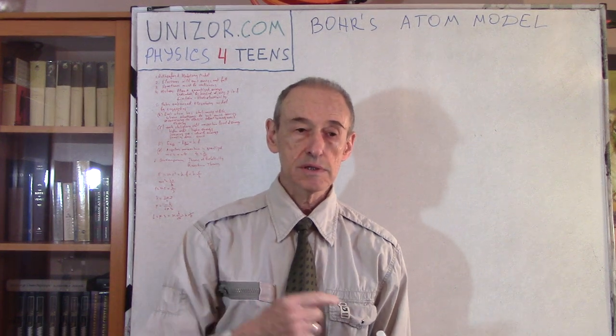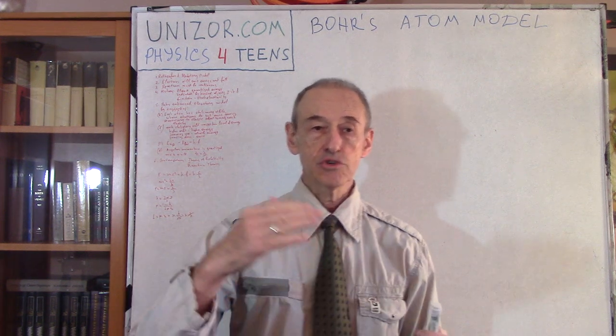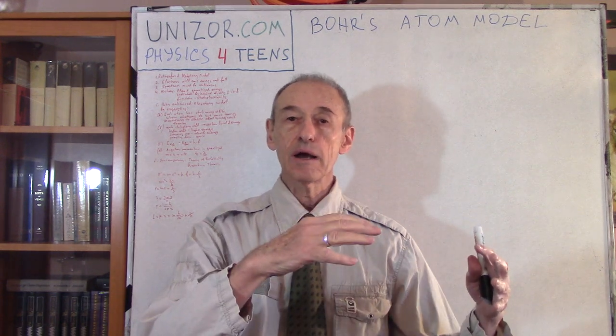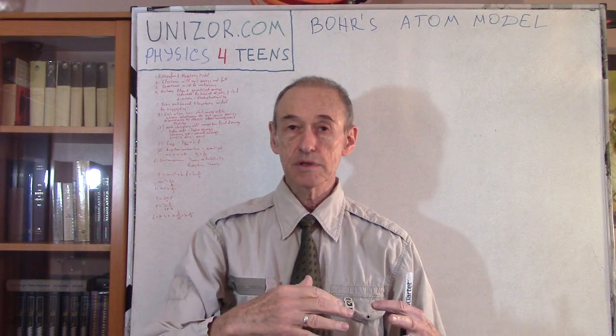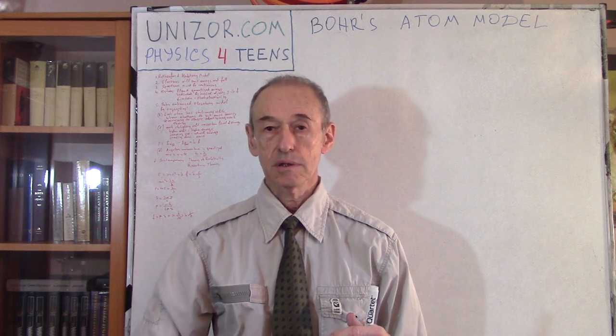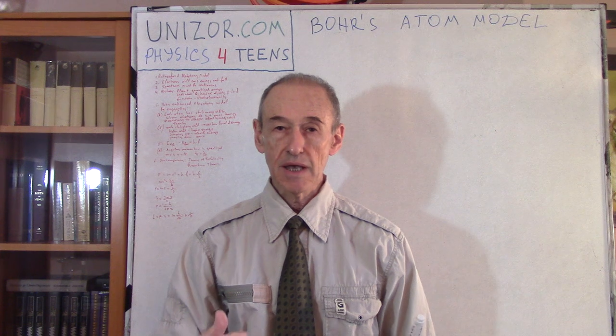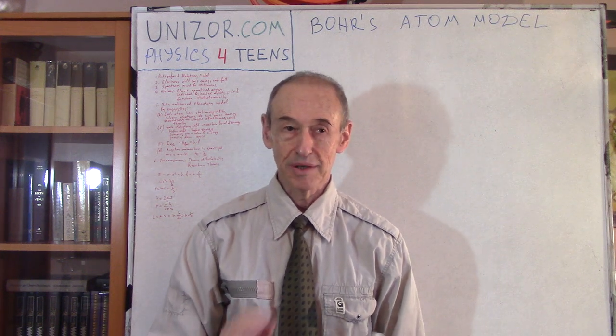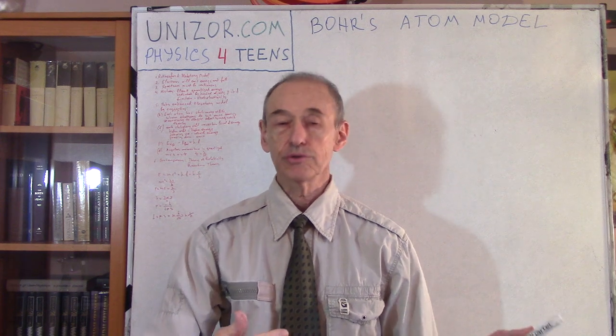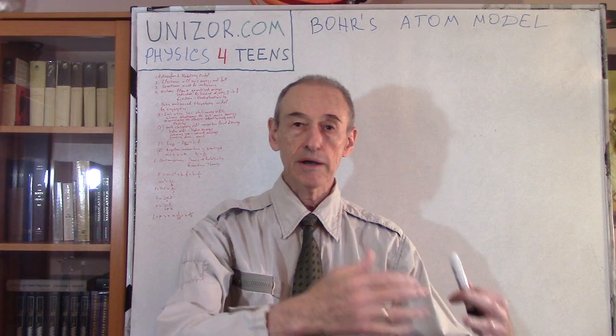One problem is that electron would lose energy and fall on the nucleus, which is not the case. There is another problem. If electron is just floating on any orbit whatsoever, then it must move from one orbit to another. If we give some energy boost to an electron, it should go to a higher, more energetic orbit. Or if it loses energy, it will emit certain electromagnetic oscillations of certain wavelengths.